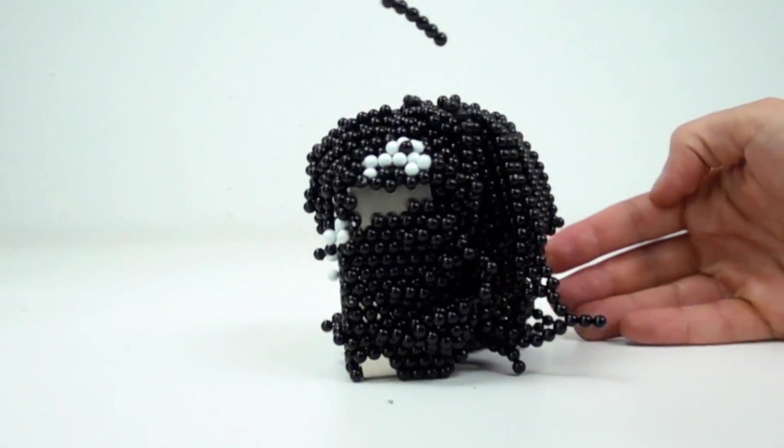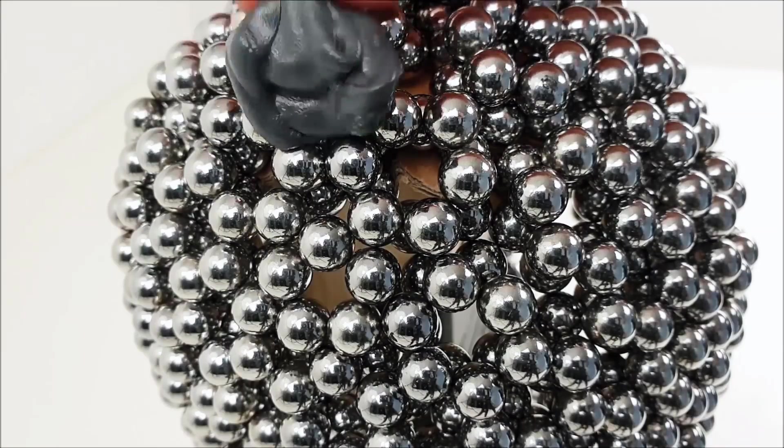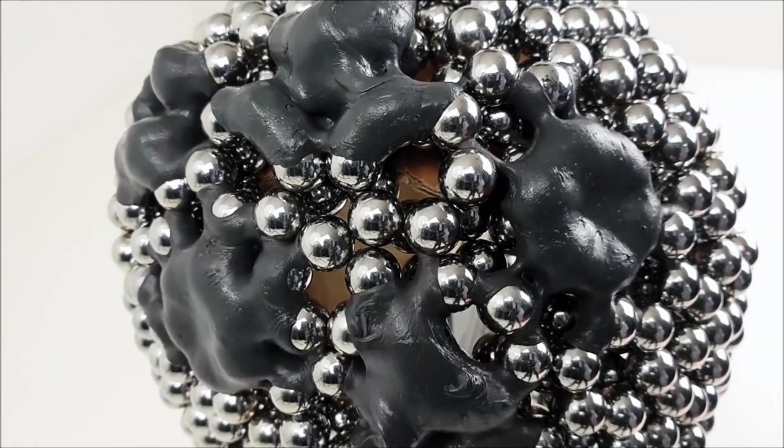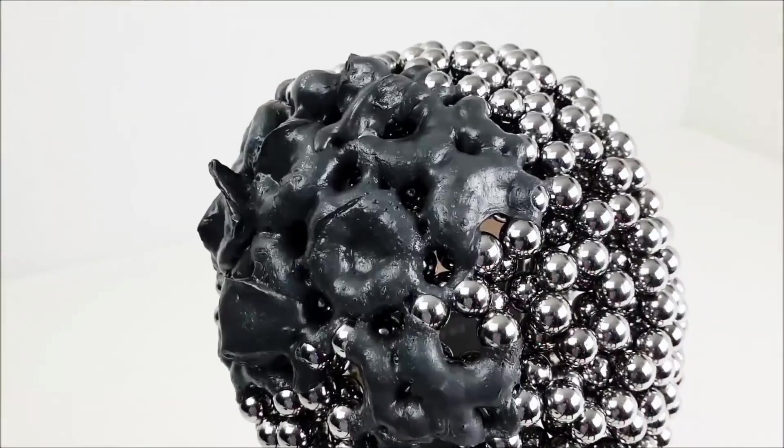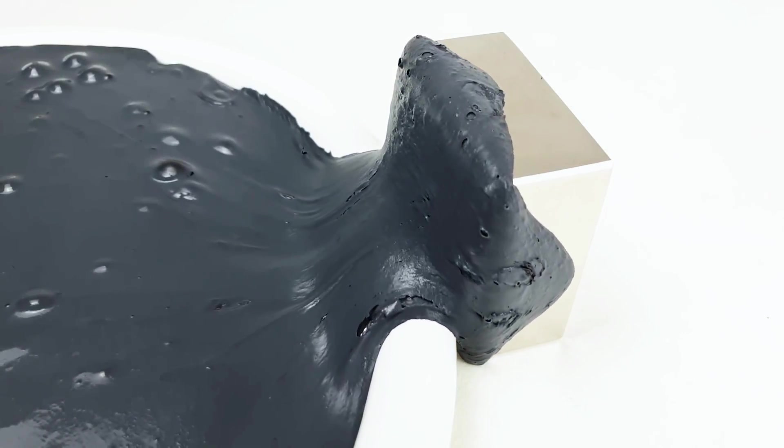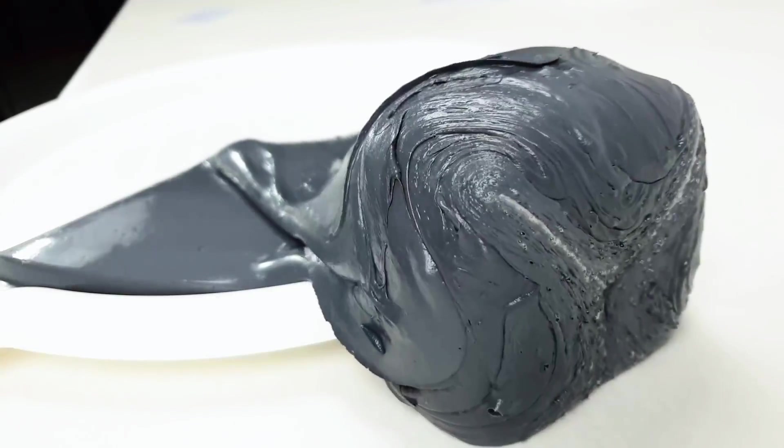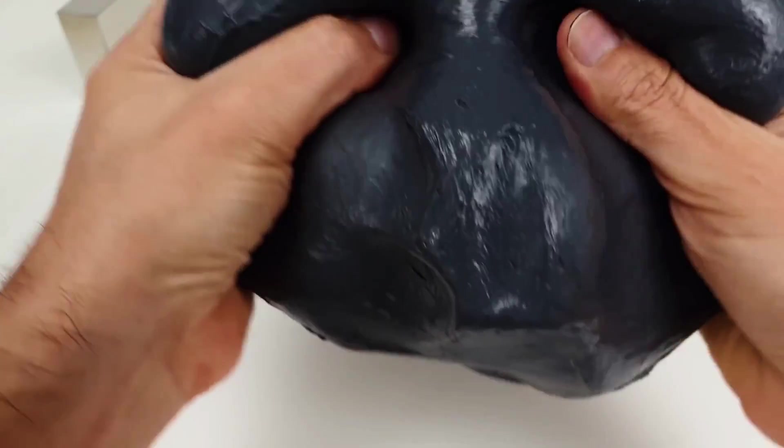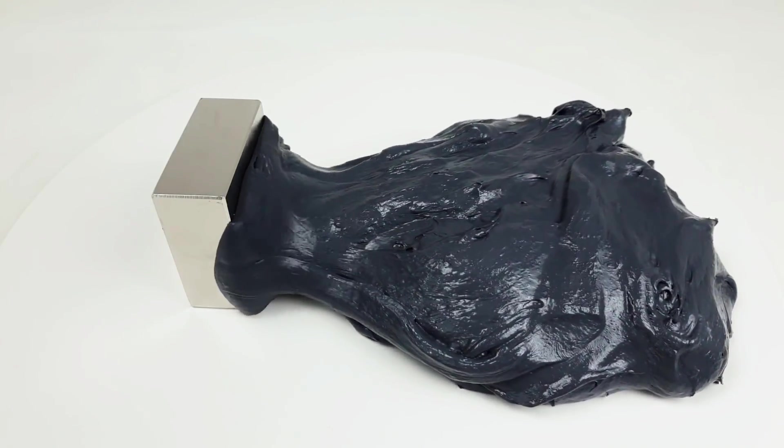When magnets come into contact with its magnetic field, the putty slowly swallows them. The magnets are absorbed because the putty's magnetic field is strongest in the middle of the blob. Magnets are steadily sucked into the putty until they reach the strongest point of the magnetic field. Because of the way it moves, you might even think that it has a life of its own. But I assure you, this is 100% not alive.